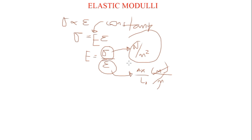When a compression force and a tension F act on an object in a unit cross-sectional area below the elastic limit, the ratio of the stress to the strain is referred to as the Young's modulus. That is, Young's modulus is the ratio of stress to strain below the elastic limit when a compression force and a tension F act on an object in a unit cross-sectional area.